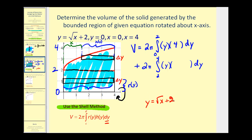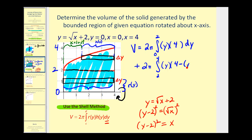We subtract two on both sides to solve for x, giving x equals the quantity y minus two, squared. So h of y equals four minus the quantity y minus two squared. We'll stop here, but you can see that if you had a choice between which method to use, the result would be the same, but the shell method is a lot more involved. Let's now look at the same problem rotated about the y-axis.